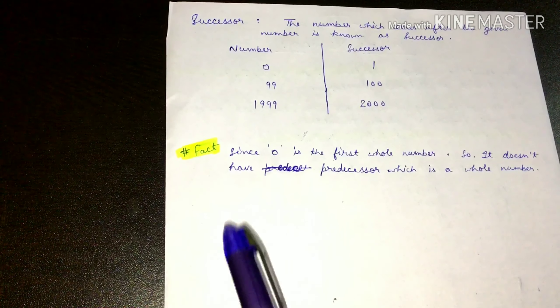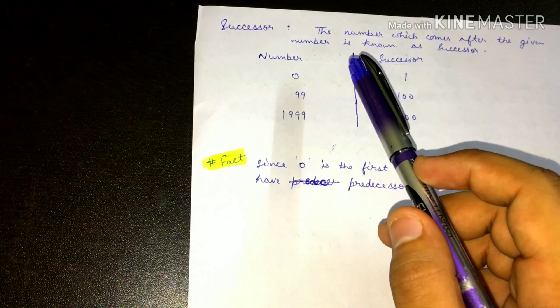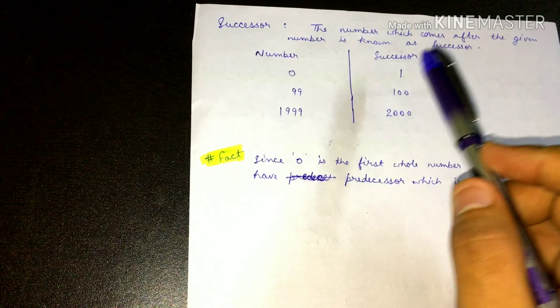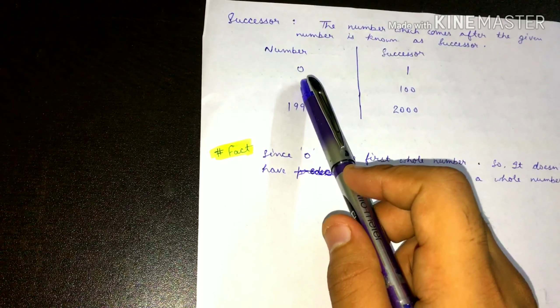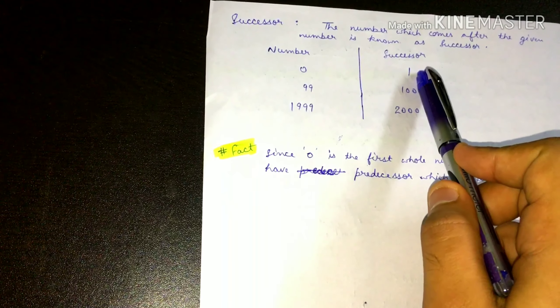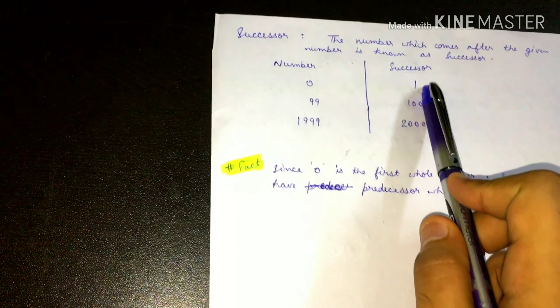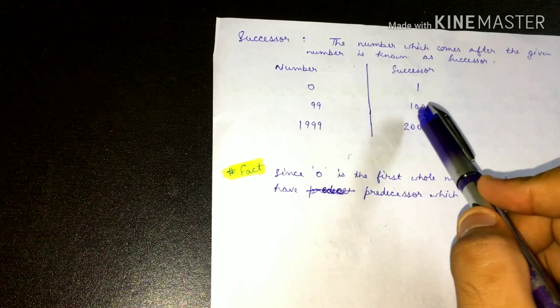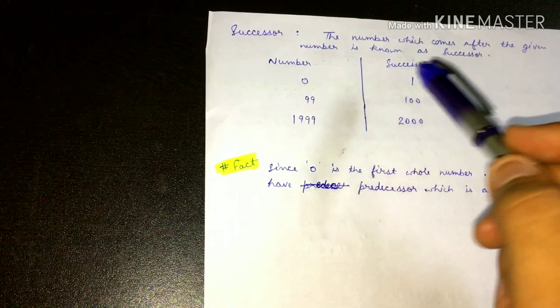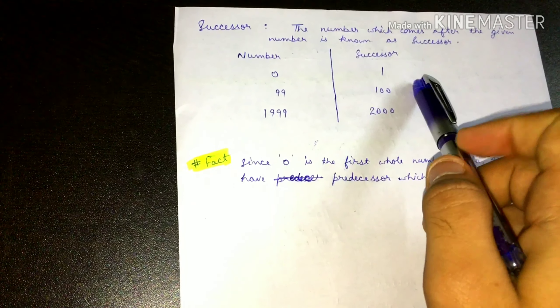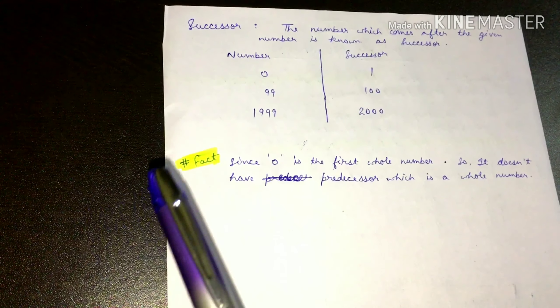Toh this was the predecessor. Aur successor kaun hoga? Jaise predecessor hota hai the number before, successor hoga the number after. The number which comes just after the given number is known as the successor. For example, if the number given is 0, the successor will be 1. And if the number given is 99, the successor will be 100.